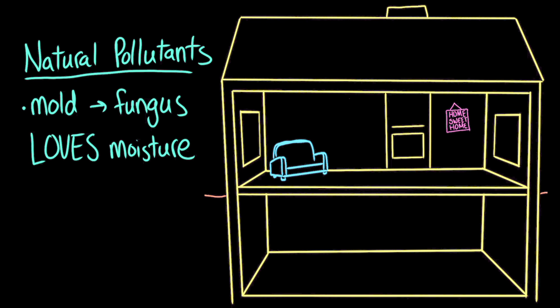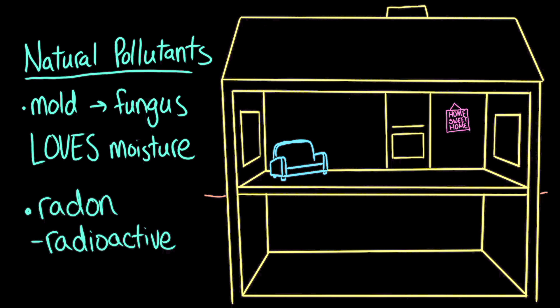Another kind of natural indoor air pollutant is radon, which is a radioactive noble gas. It's produced by the natural decay of radioactive rocks in the ground. Let's say that Ava's basement has some cracks in the foundation and the walls. That would mean that when radon seeps upward through the soil, it could enter these cracks and be stuck inside Ava's house.